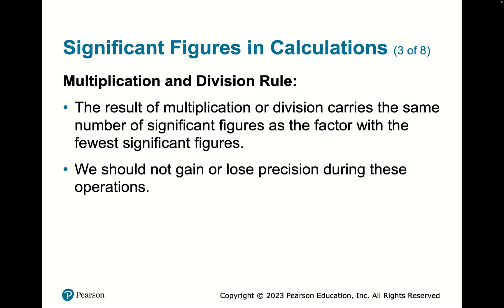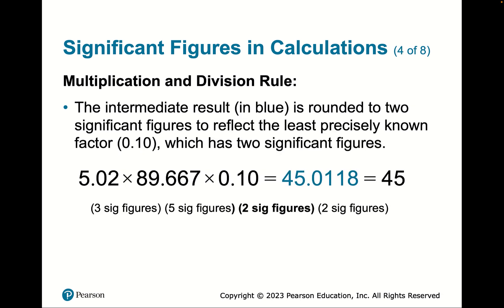For multiplication and division, the answer must have the same number of significant figures as the operand with the fewest sig figs. Don't truncate until the final answer. For example: 5.02 (three sig figs) × 89.667 (five sig figs) × 0.10 (two sig figs). The fewest is 0.10 with two sig figs, so the answer must have two sig figs: 45. We know this to probably plus or minus 1.